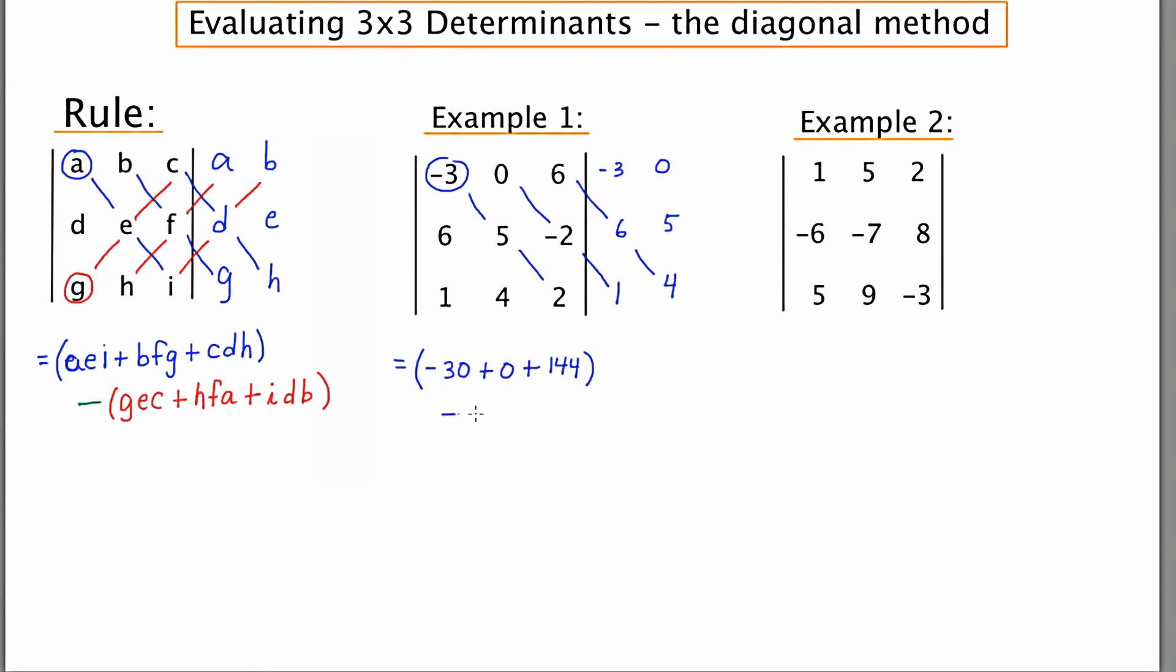Now I'm going to subtract from that going up the other way. So the first product is one times five times six, which is 30. And then I've got four times negative two times negative three, which is 24. And the last diagonal also includes a zero. So that's going to be nothing at all, but I'll put zero just to account for that space.